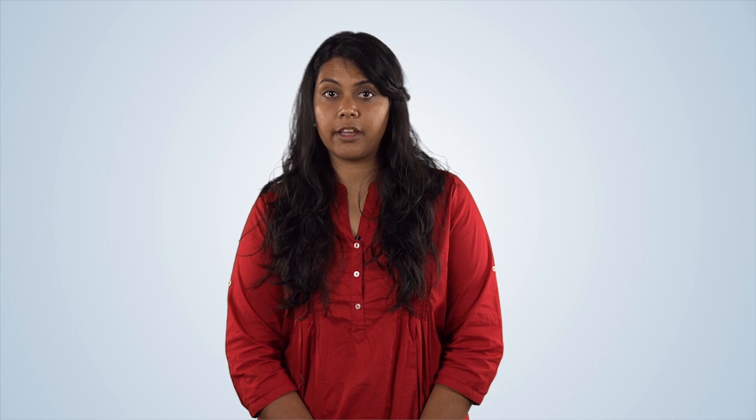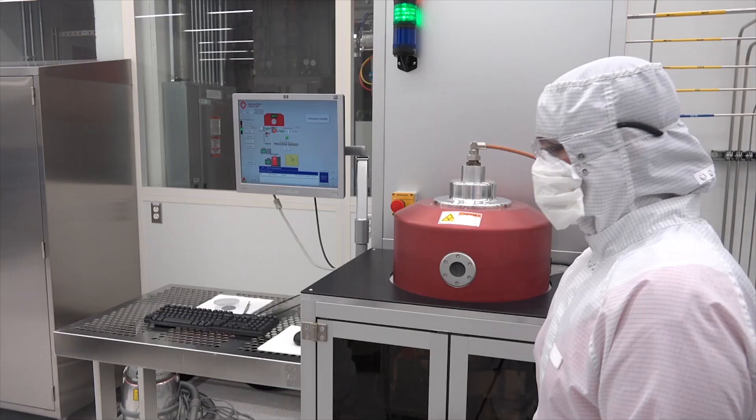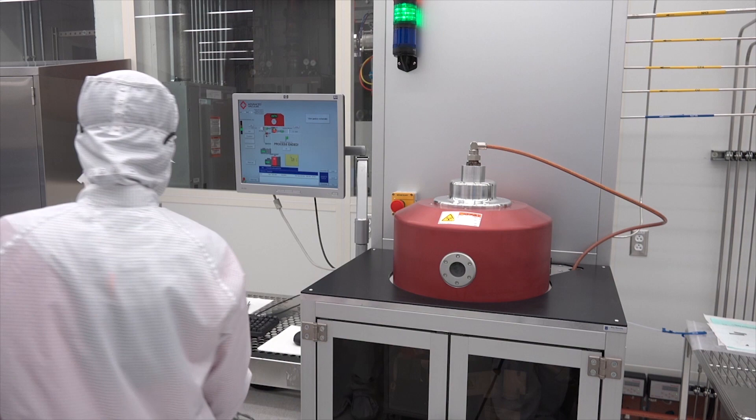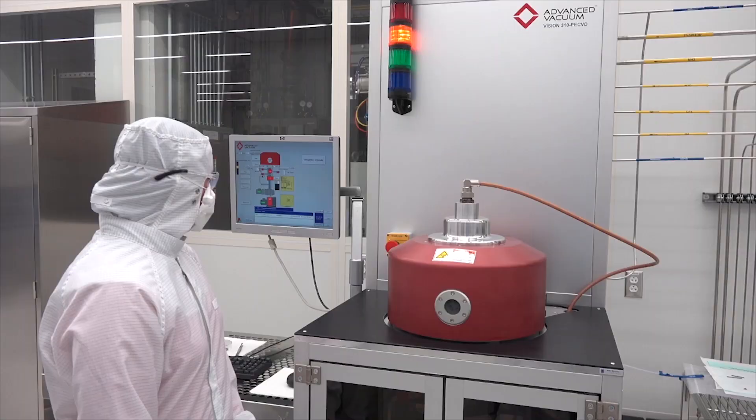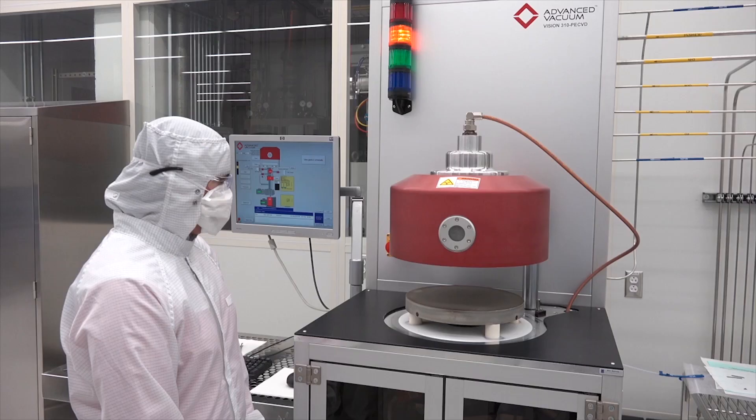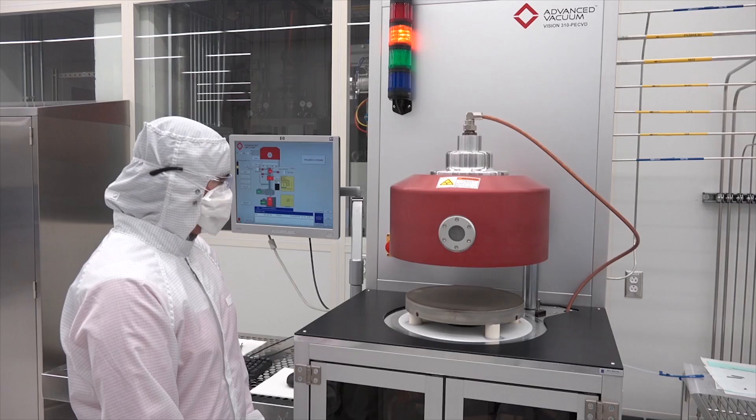Since the chamber is under vacuum right now, my first step is to vent the chamber. This means that we flow nitrogen into the chamber until it reaches atmospheric pressure, which is the pressure in the room. And then, the red chamber dome will automatically lift and rotate to the side.